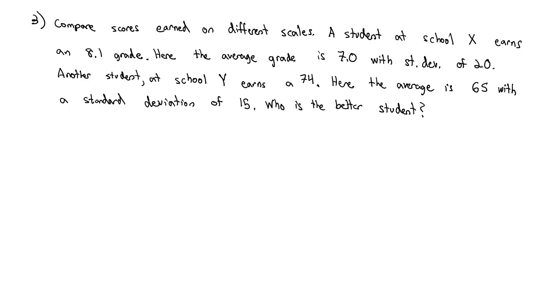What's nice about z-scores is we can compare everybody to the mean and how many standard deviations they are from the mean. So at school X, we earned an 8.1 grade, the average mu is 7.0, and the standard deviation sigma equals 2. For this student at school X, z equals 8.1 minus 7.0 divided by 2.0. I need to make sure that numerator is in parentheses, and when I do, I find out the student here at school X has a z-score of 0.55, a little more than half of a standard deviation above the mean.